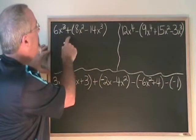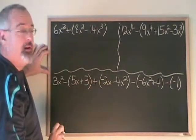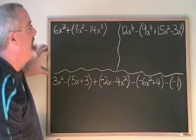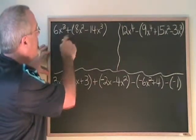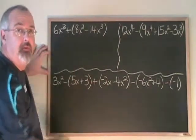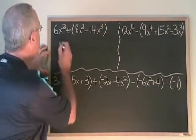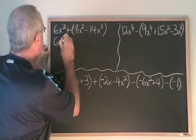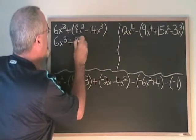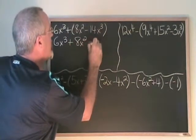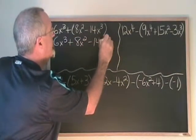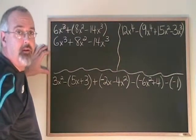Here we have 6x³ plus a bracket. Inside the bracket, 8x² minus 14x³. Because there's a plus sign before the bracket, we can remove the bracket and nothing much changes at all. We have plus 8x² minus 14x³. Now we just combine similar terms and give our final answer.